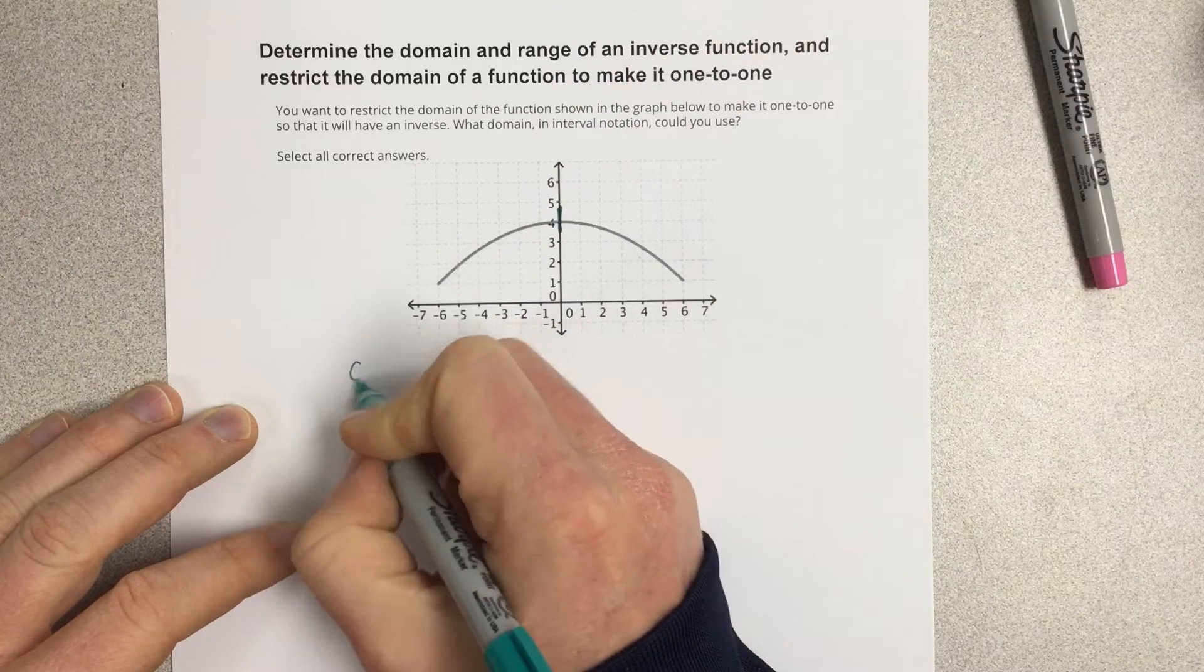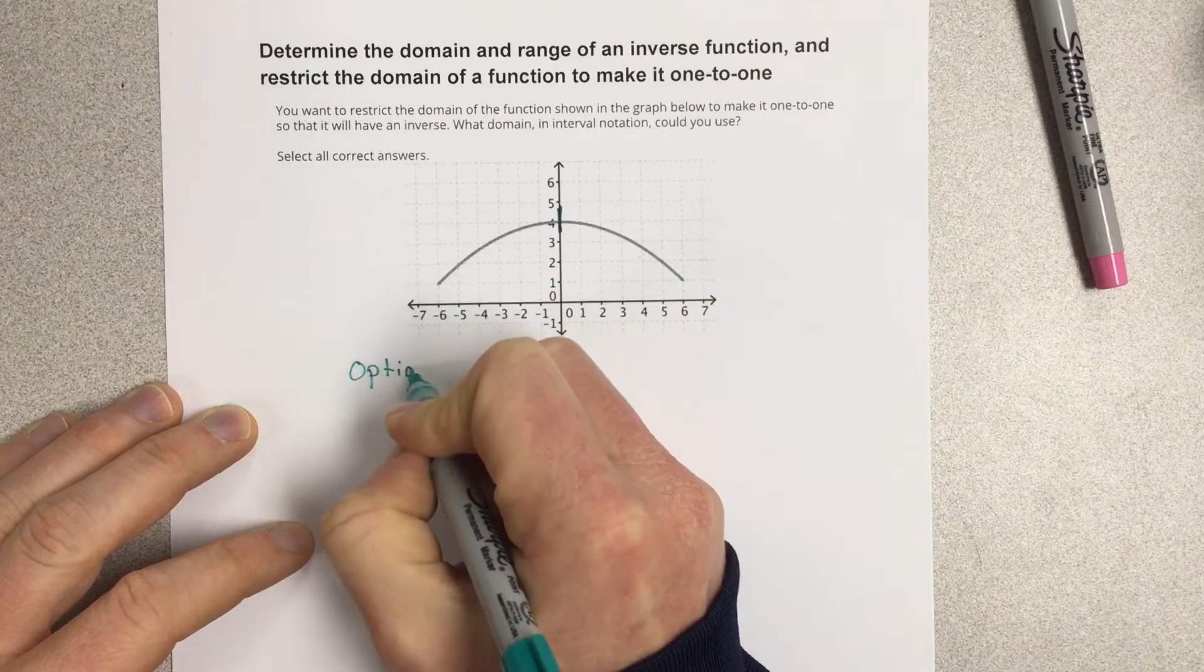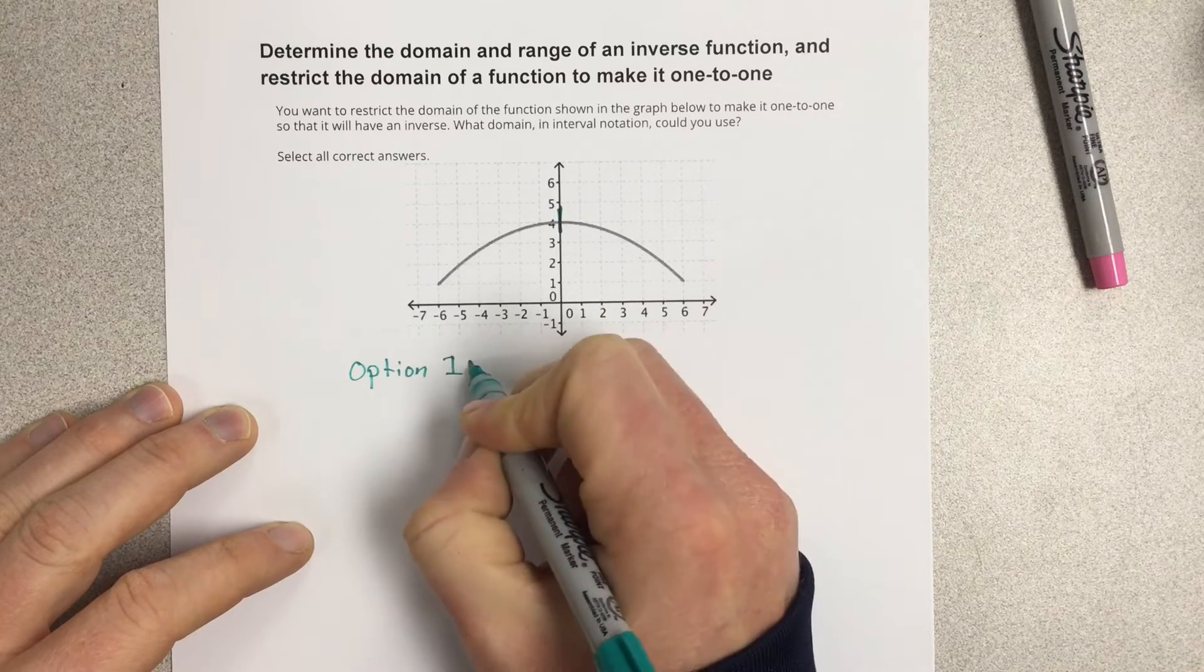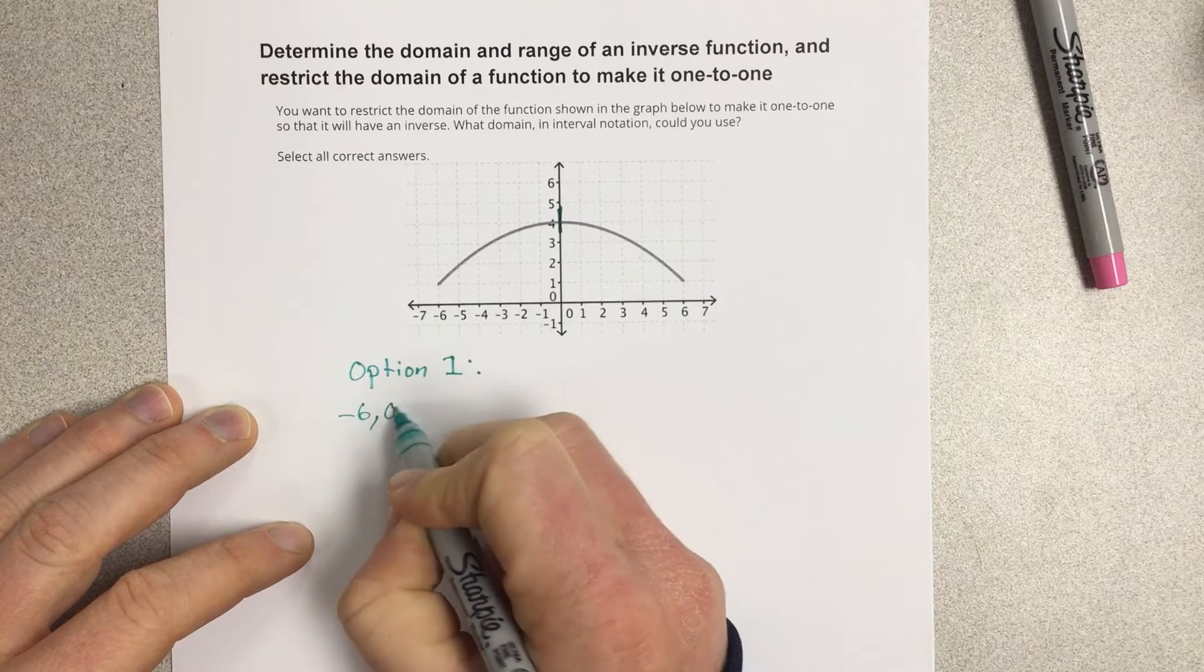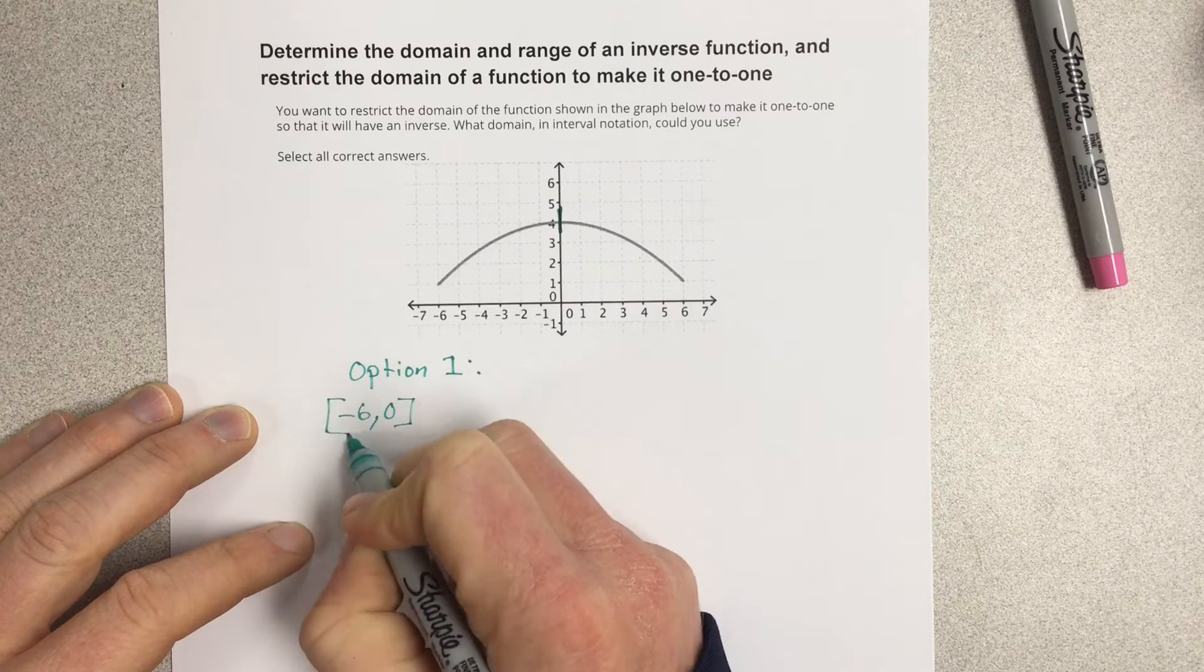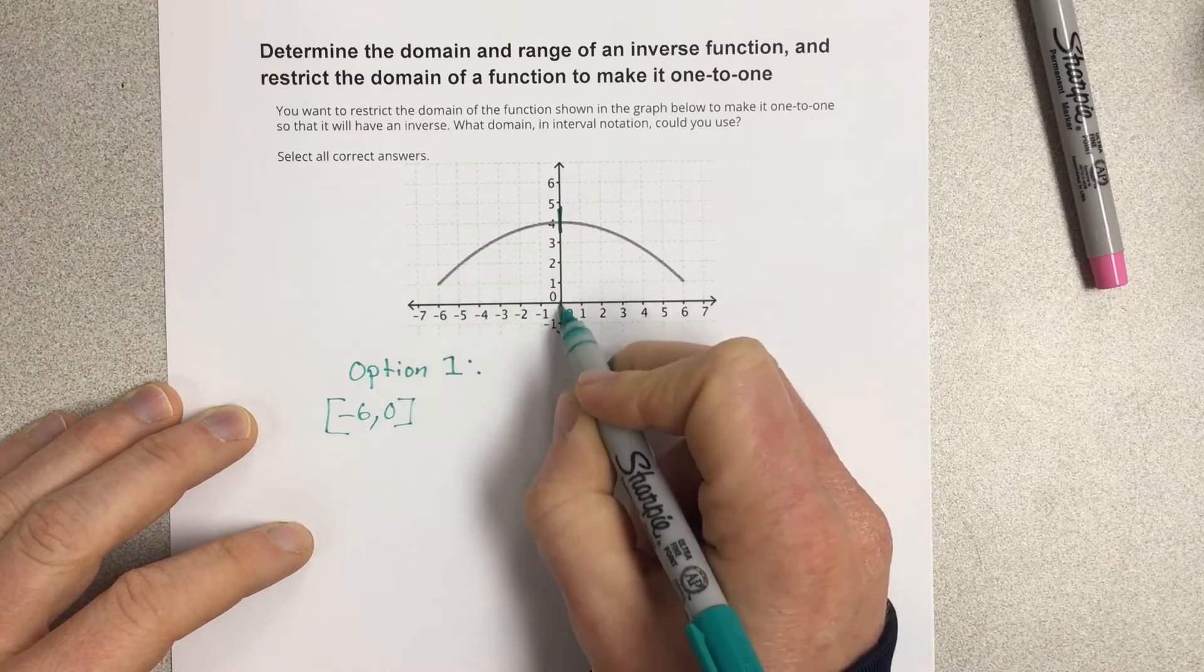My option one for restricting a domain is to say that negative 6 to 0 is the domain. Negative 6 for the x value to 0 here.